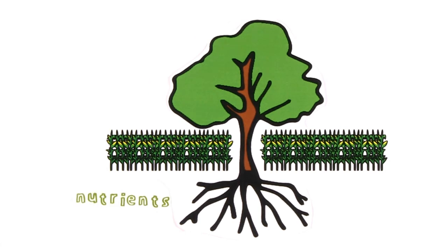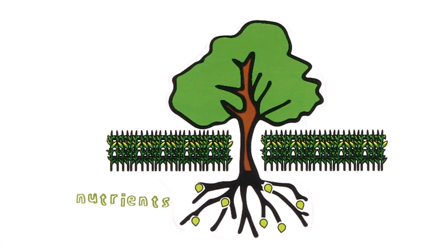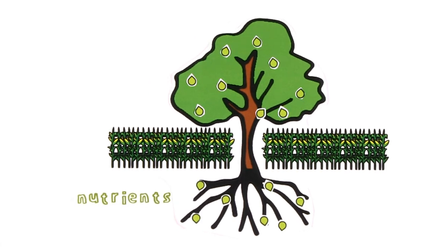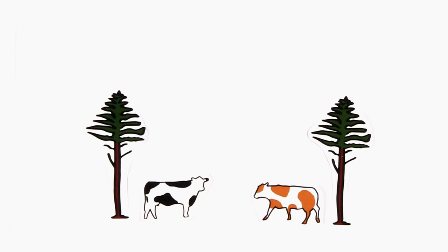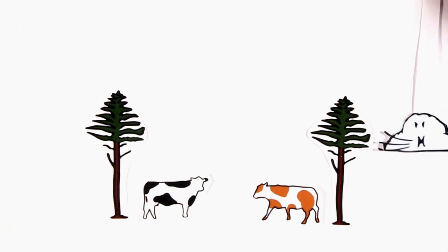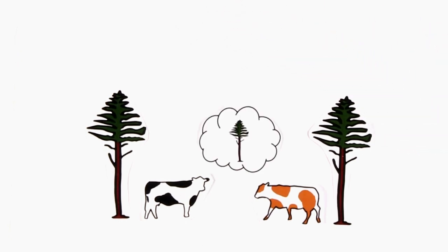Trees also take up nutrients in deeper layers that cannot be reached by the crops, and thereby prevent the leakage of fertilizers or manure into the groundwater. The canopies of the trees serve as windbreaks, which lower the evaporation of the surrounding vegetation and act as a shelter for increased animal welfare.